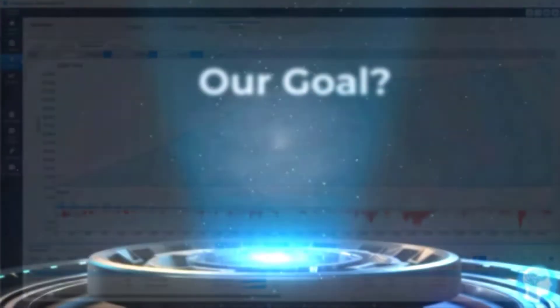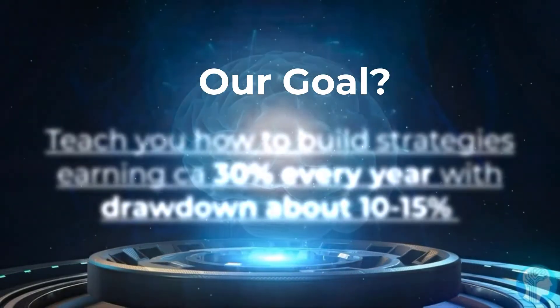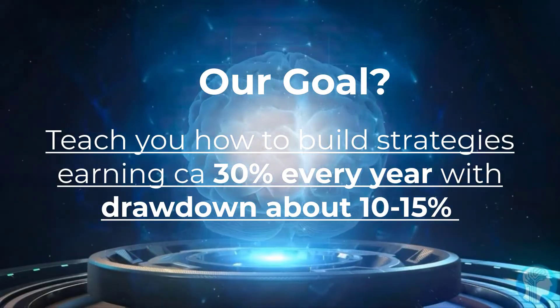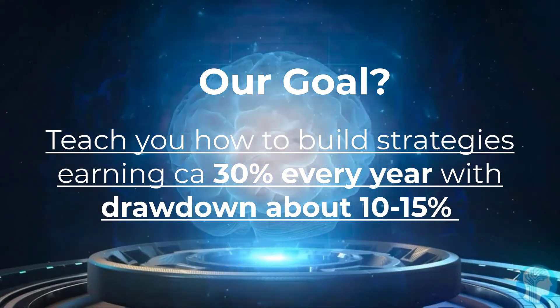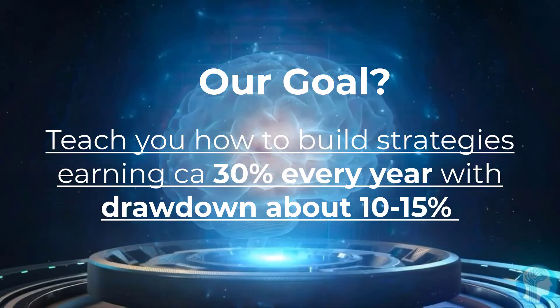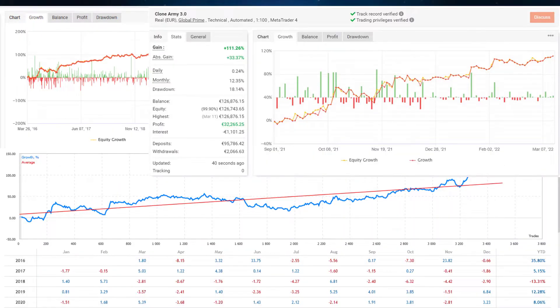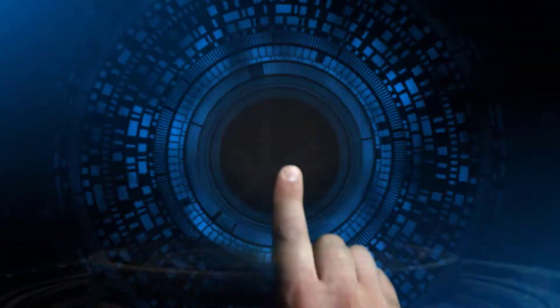Our goal is to help you make about 30 percent each year with a low risk, about 10 to 15 percent drawdown. Check these results so you can see it's really possible. And guess what? Right now you have a special opportunity.